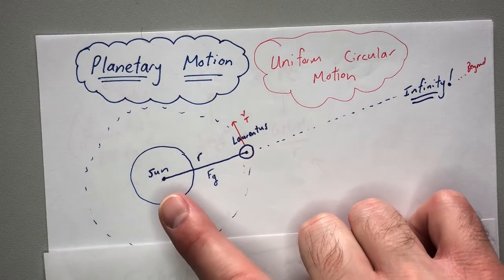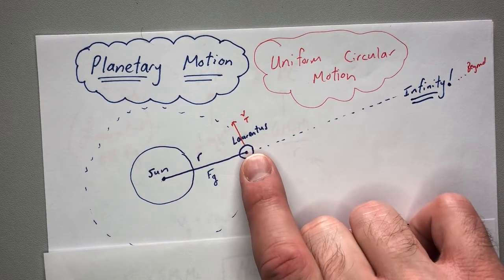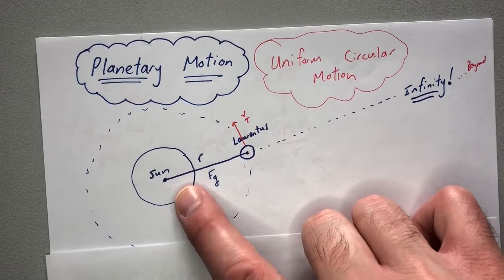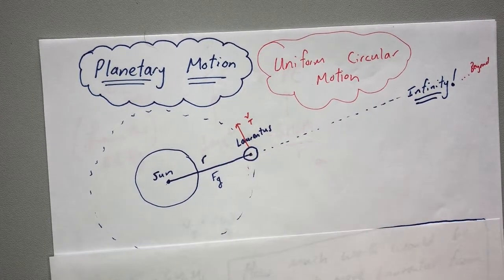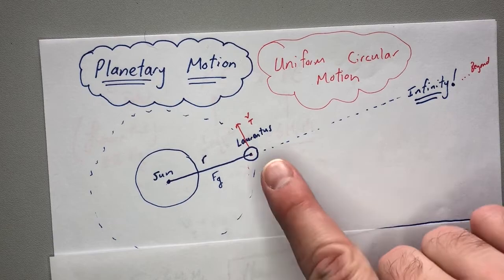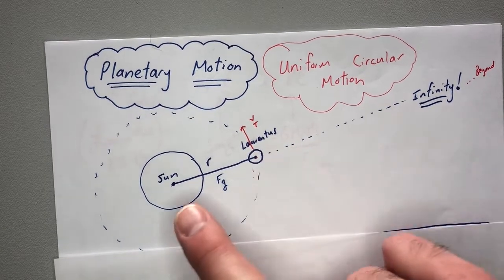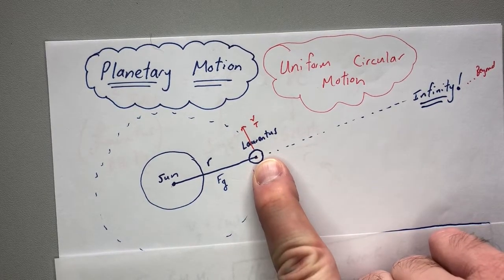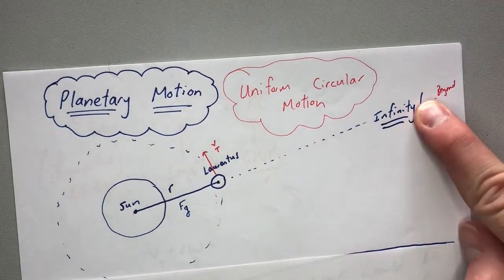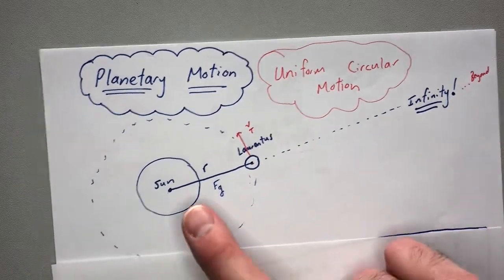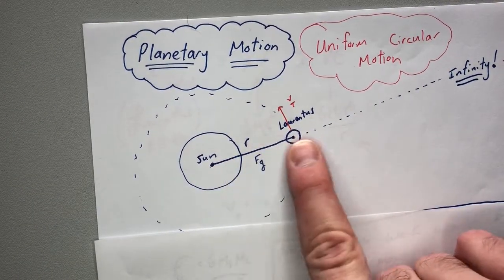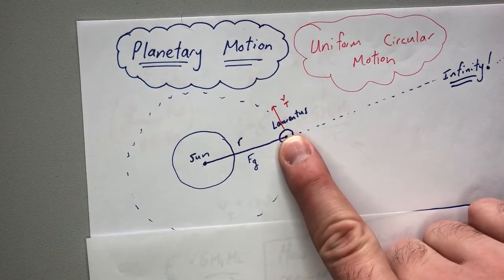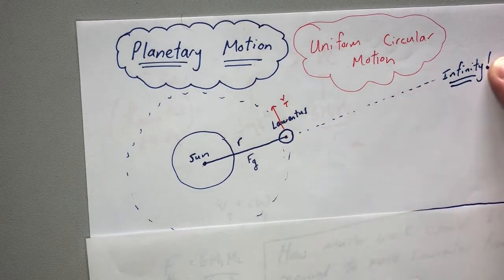Let's say you had Planet Laurentiis, and you have the sun right here. Planet Laurentiis has a mass, the sun has a mass. They both have masses and gravitational pulls toward each other. We're going to figure out how much work it would take to move Planet Laurentiis from some distance r away — from the center of mass of the sun to the center of mass of Planet Laurentiis — out to some point at infinity.